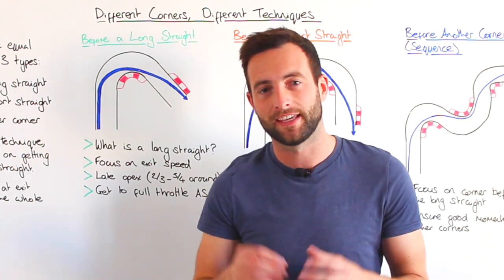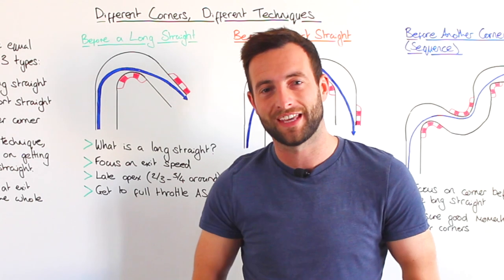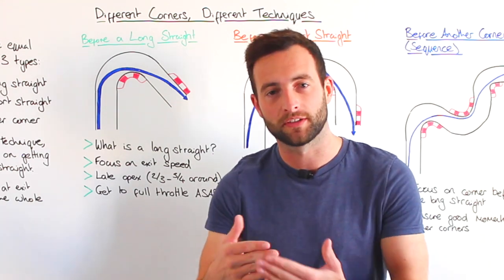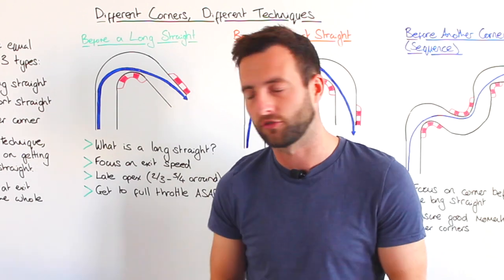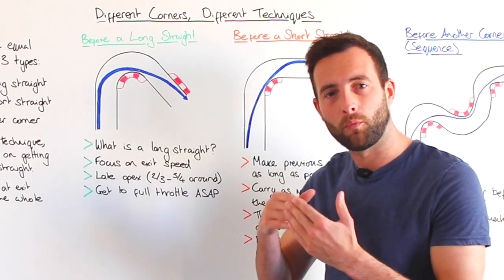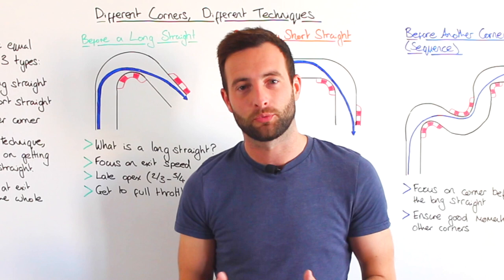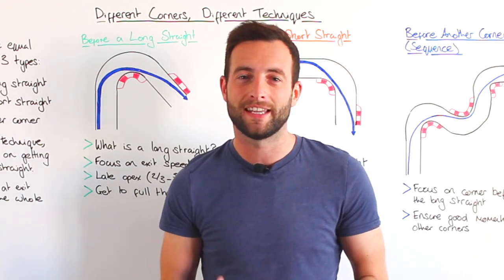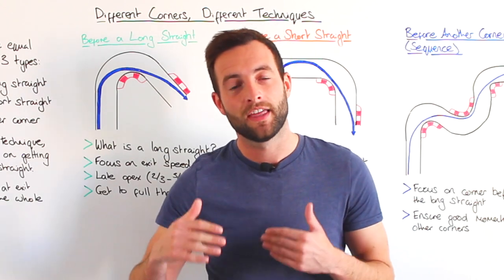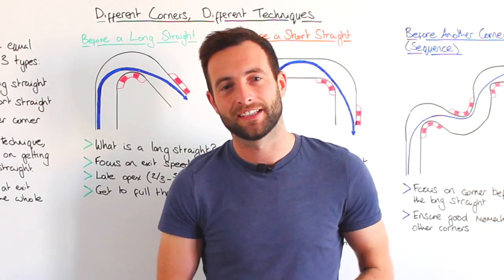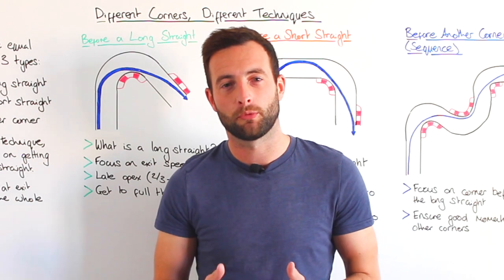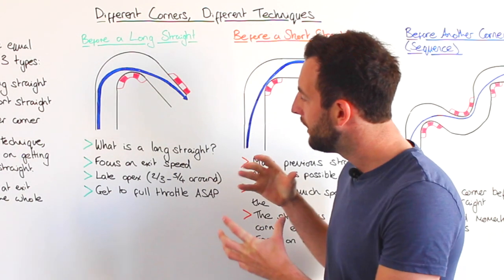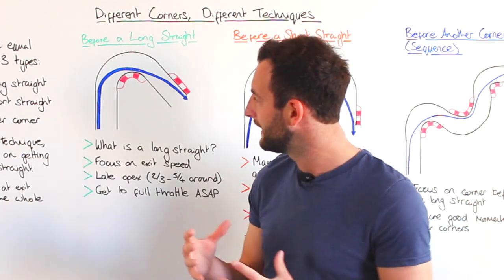If you're on a track day you often get told where the safe areas to overtake are, and these are generally on the longest straights. When a car is in a straight line that's when it's going the quickest. So if you have a corner before a long straight we really need to think about maximising the exit speed and getting on the accelerator as soon as we possibly can to carry all that speed down the next straight.